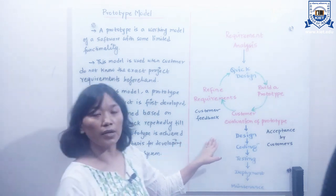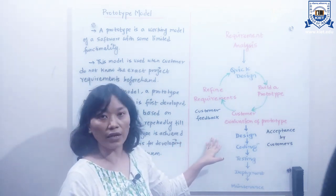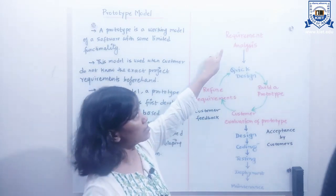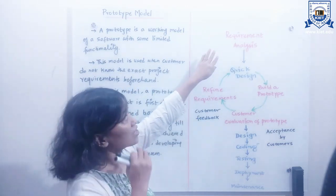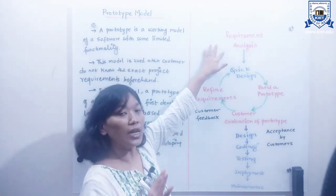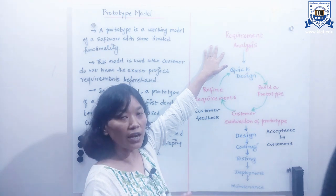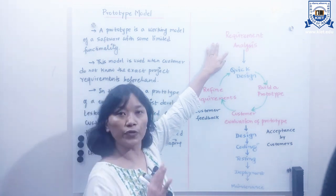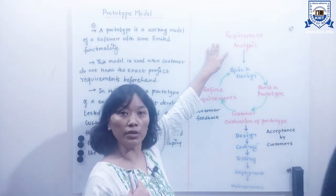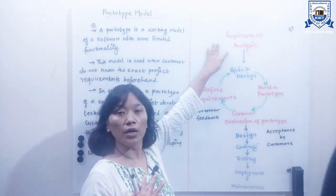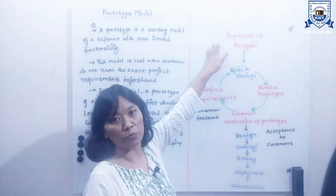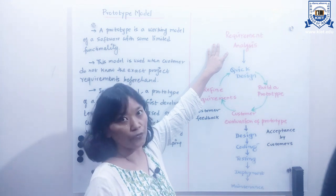This accepted prototype is the basis for developing the actual software system. As you can see in the diagram, the phases that come under the prototype model. The prototype model starts with requirement analysis. In this phase, requirements of the software system are defined, and users are interviewed to know their exact expectations from the software system.